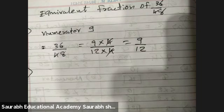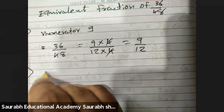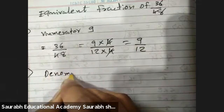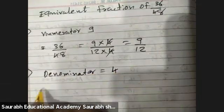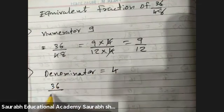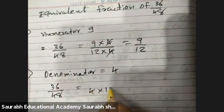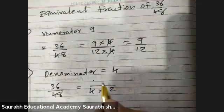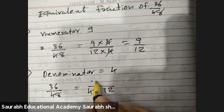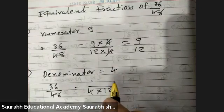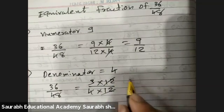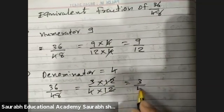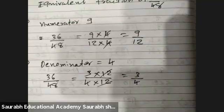Next question is denominator 4. Thirty-six upon forty-eight. Four twelves are 48, three twelves are 36. Twelve cuts, answer is three upon four.